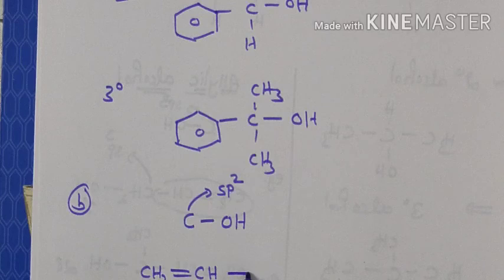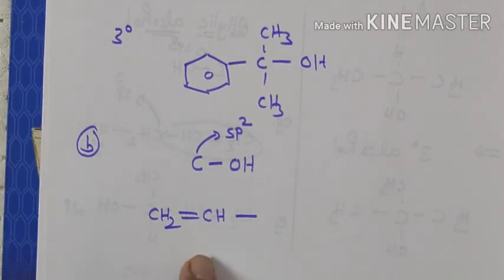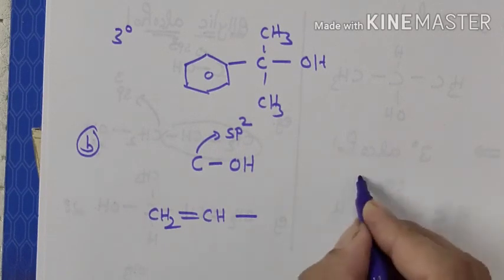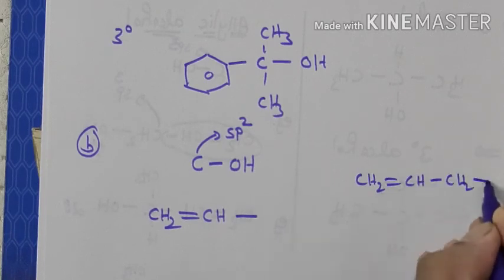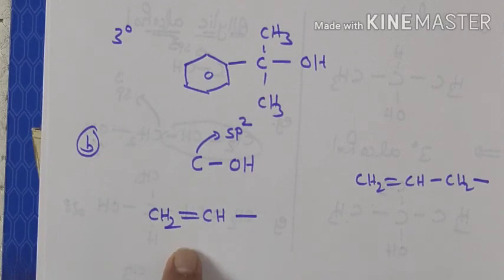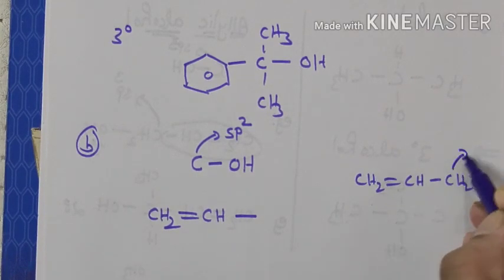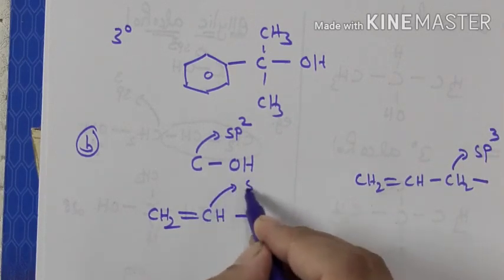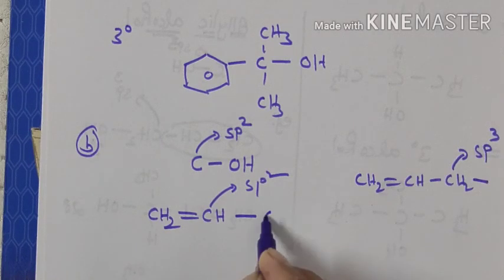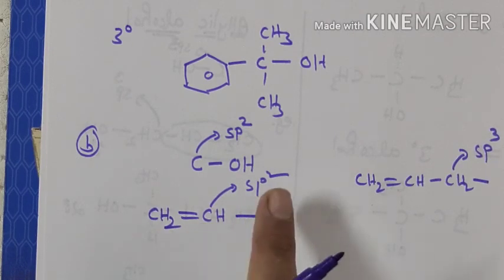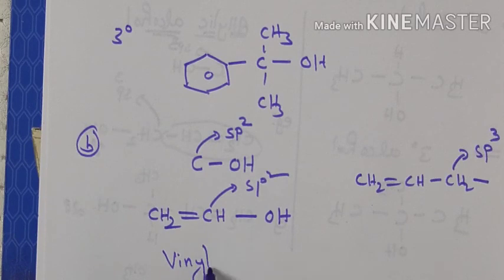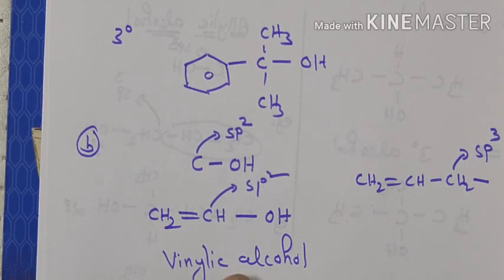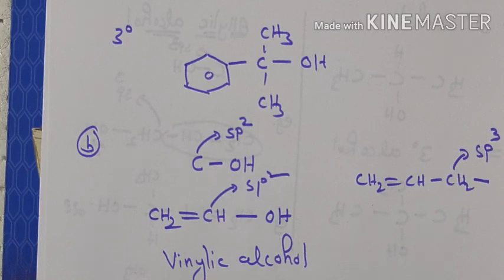Now, one more classification. When OH is present on an sp2 hybridized carbon, this is vinylic alcohol. What is the difference between allylic and vinylic? In allylic, the OH-bearing carbon CH2=CH-CH2 is sp3 hybridized. But in vinylic — CH2=CH — this carbon is sp2 hybridized. If OH is present on this sp2 carbon, it is called vinylic alcohol.